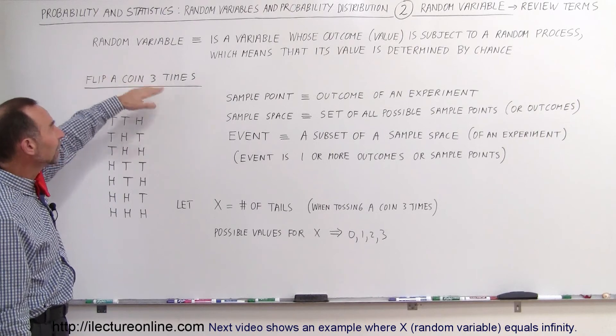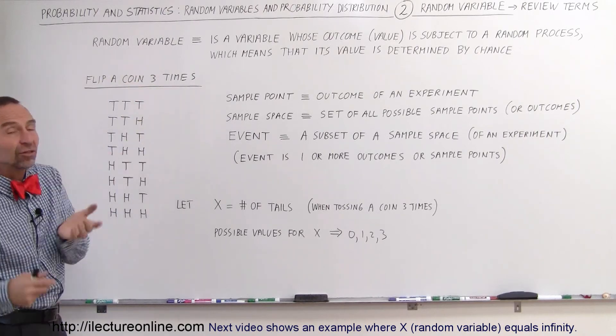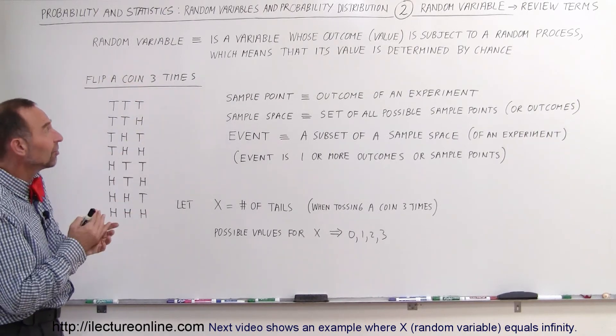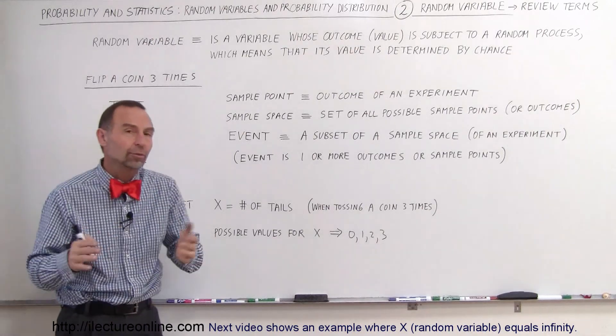The definition of a random variable is a variable whose outcome or value is subject to a random process, which means that its value is determined simply by chance.